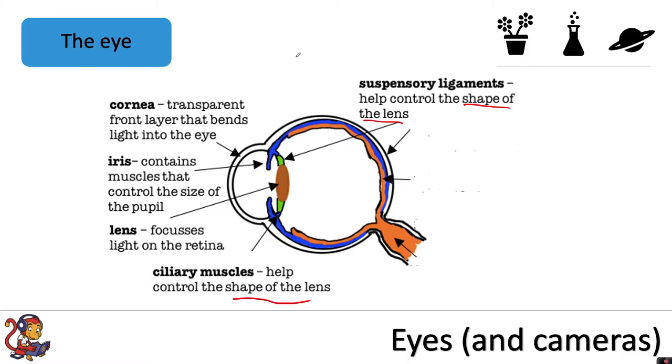So sometimes this lens might be fatter to bend the light more, sometimes it might be thinner and that is all controlled by the ciliary muscles and the suspensory ligaments. That will then help the lens focus the light correctly onto the retina. And of course if this doesn't happen properly perhaps you would need to wear glasses to help that process.